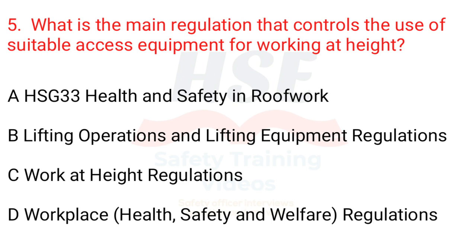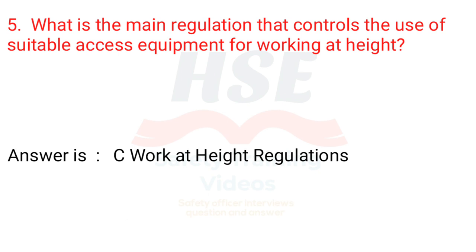Question 5: What is the main regulation that controls the use of suitable access equipment for working at height? A. HSG 33 Health and Safety in Roof Work. B. Lifting Operations and Lifting Equipment Regulations. C. Work at Height Regulations. D. Workplace, Health, Safety and Welfare Regulations. Answer is C. Work at Height Regulations.